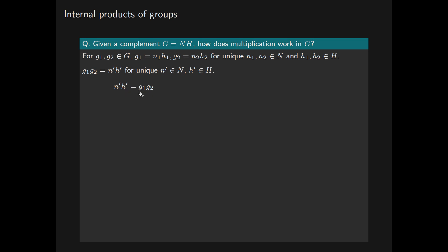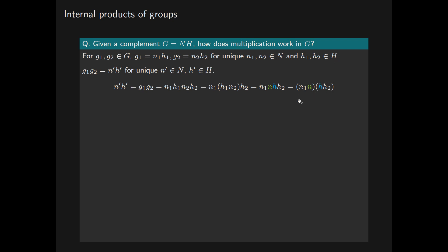We have N'H' equals G1·G2, which equals N1·H1·N2·H2. If we group H1 and N2 together, we know this will also have a unique decomposition NH for some element N in subgroup N — denoted here by green N — and a unique element H in subgroup H — denoted here by blue H. Grouping together, we have the product of N1 with green N, multiplied by the product of blue H with H2. We know that the first part is an element of the subgroup N and the second is an element of the subgroup H. So this is precisely our decomposition.